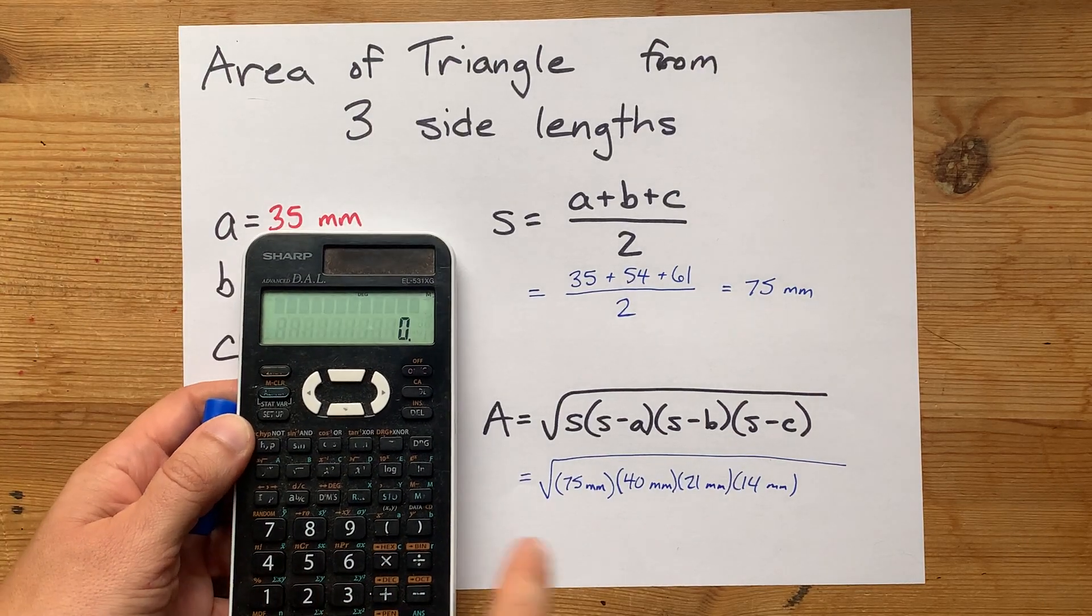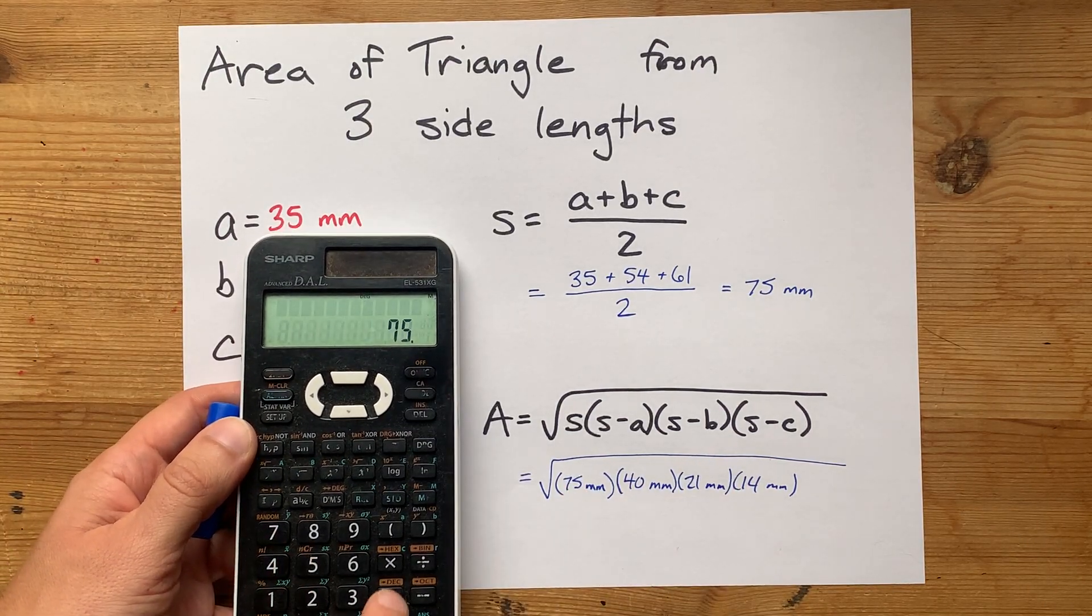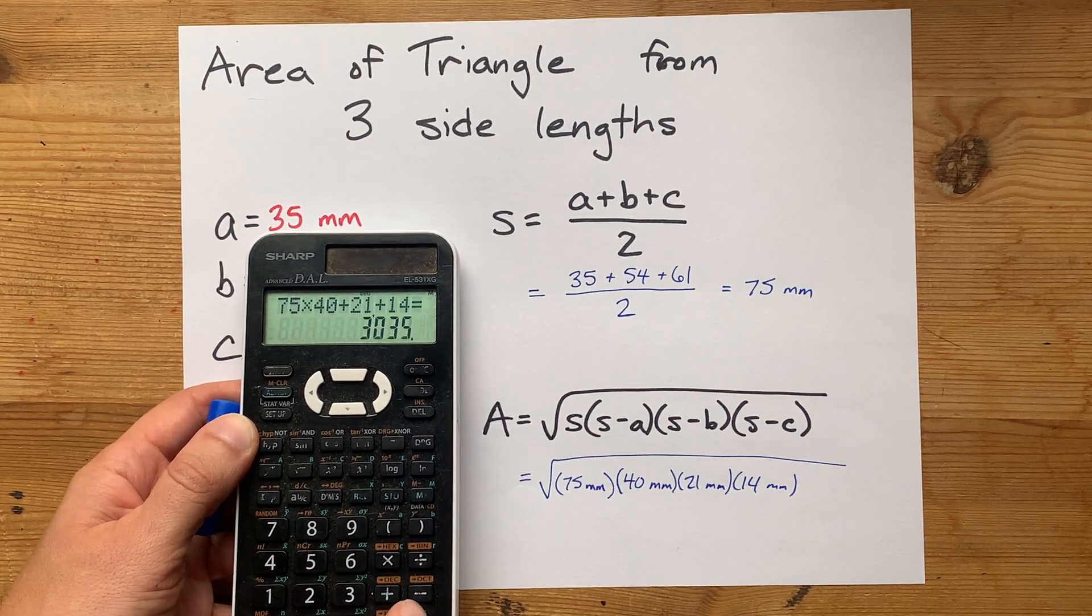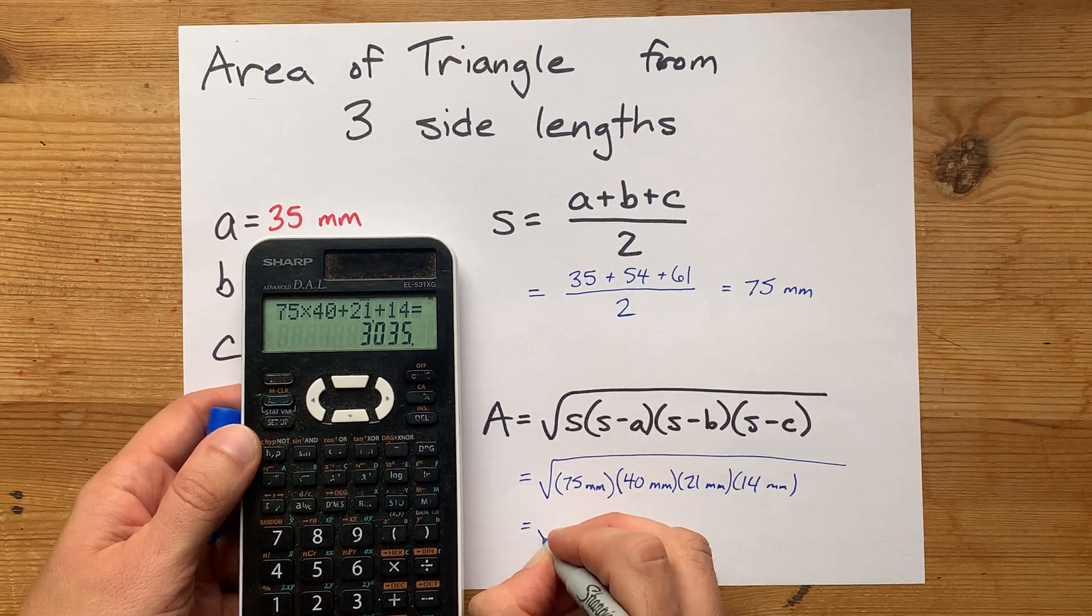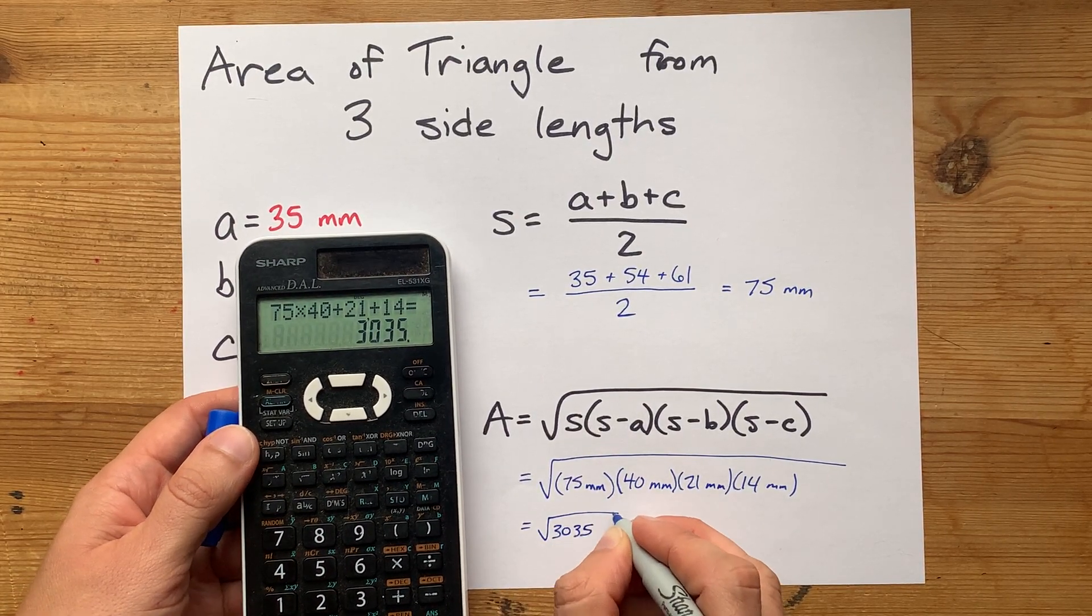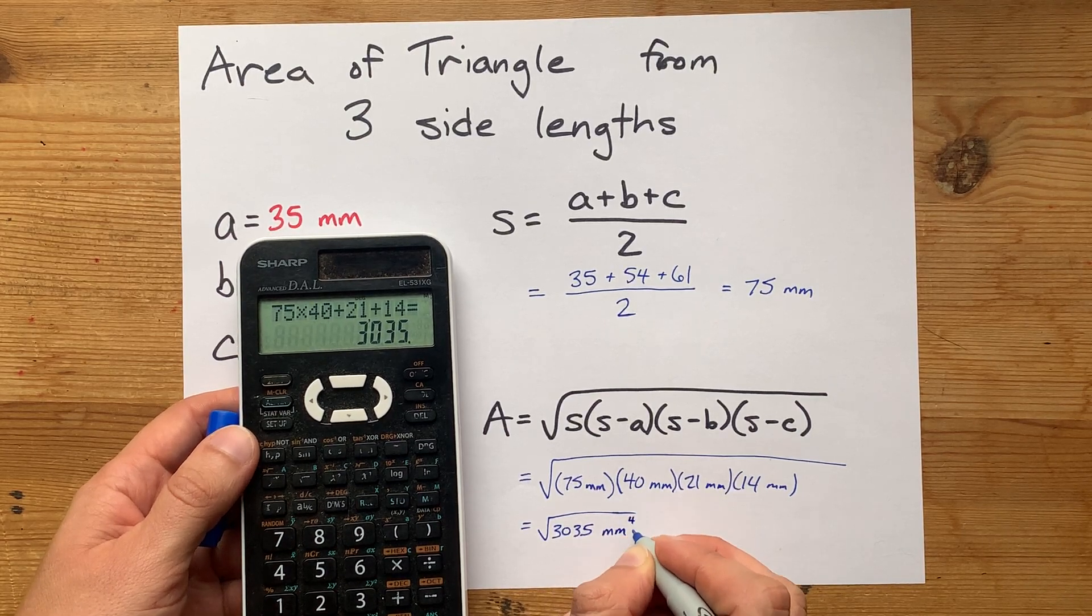Now, I'm going to multiply all the things that are together under the square root. 75 times 40 times 21 times 14. That gives me 3035. And if you want to write units here, this is in millimeters to the power of 4.